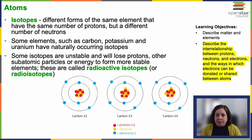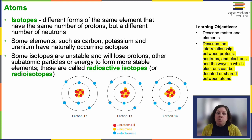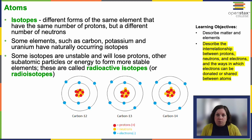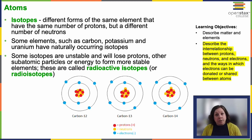Let's talk about isotopes. Isotopes are different forms of the same element — they have the same number of protons, because in order to be that specific element you have to have that set number of protons, but they have a different number of neutrons. Some elements like carbon, potassium, and uranium have naturally occurring isotopes that can be found in nature; they don't have to be created in a lab.